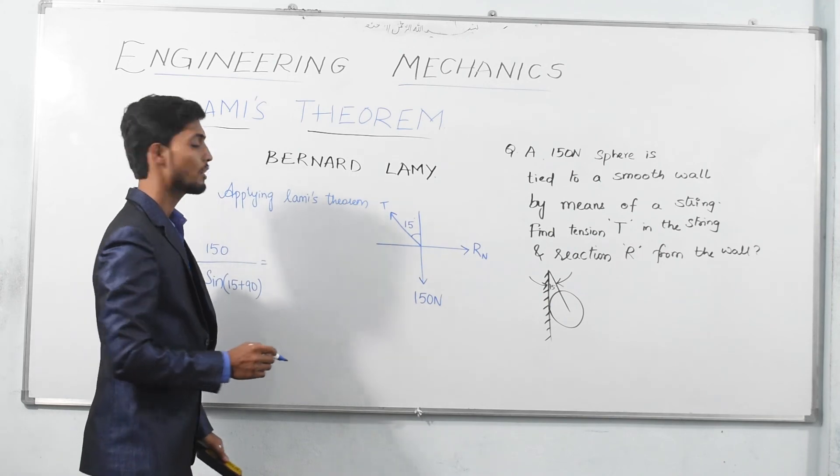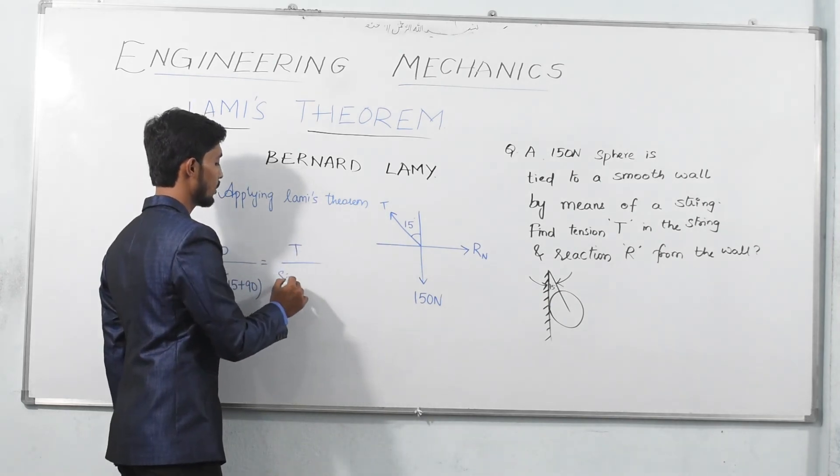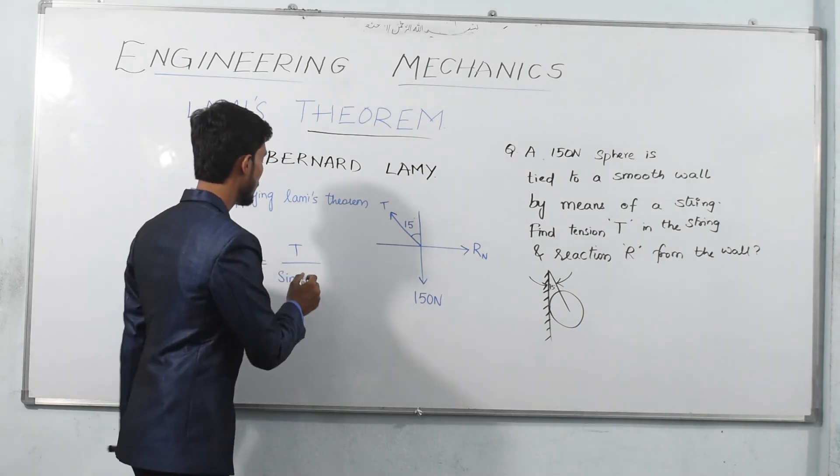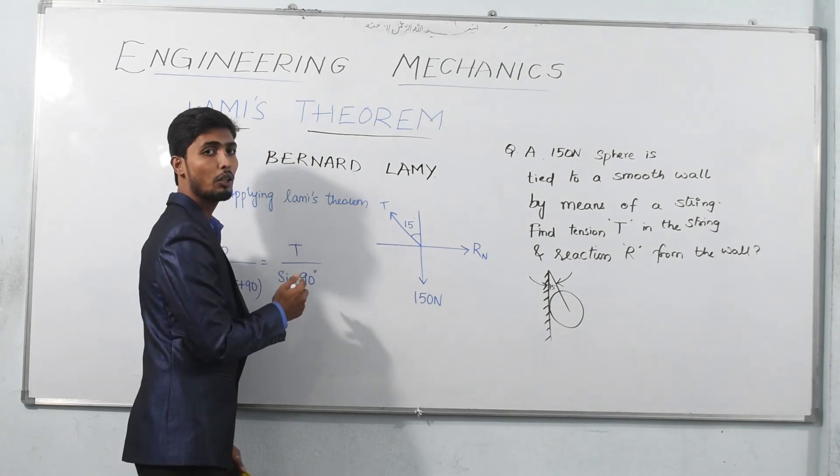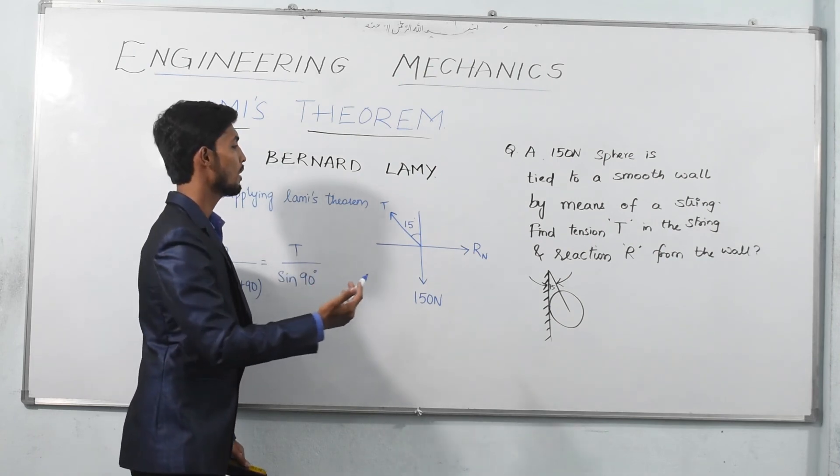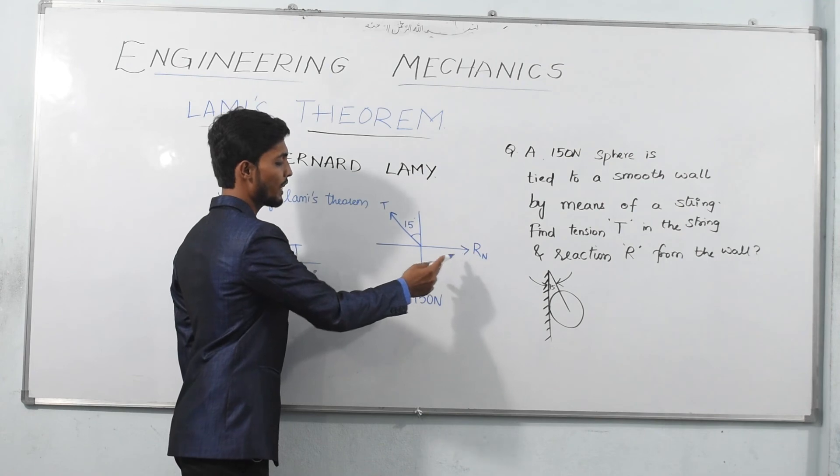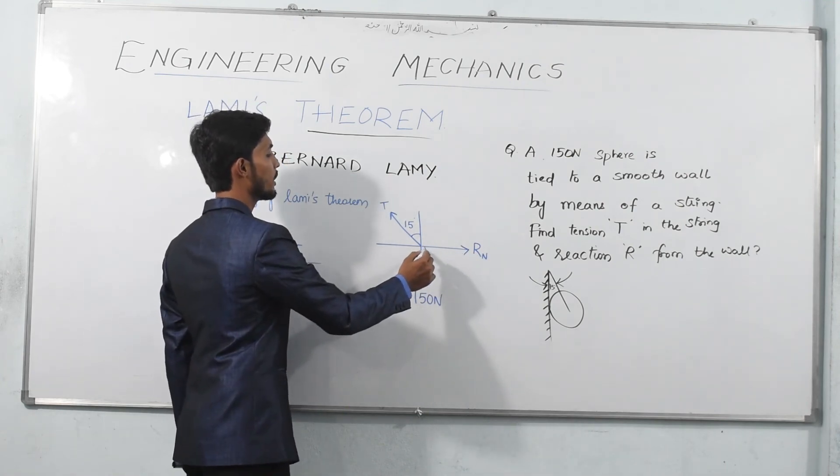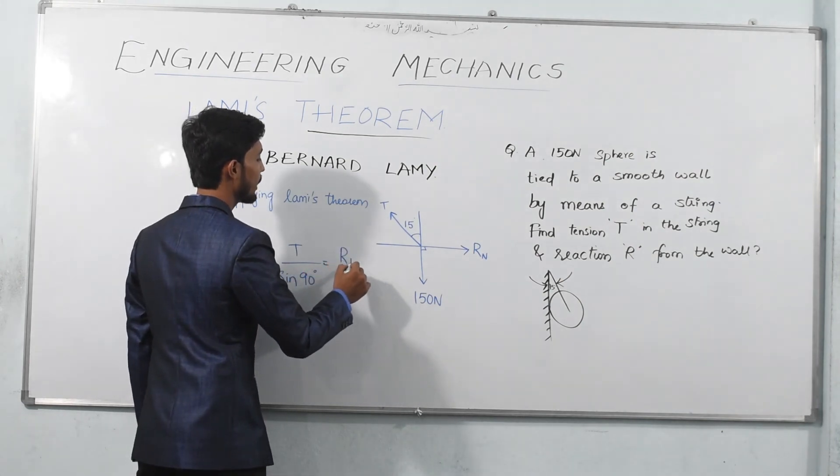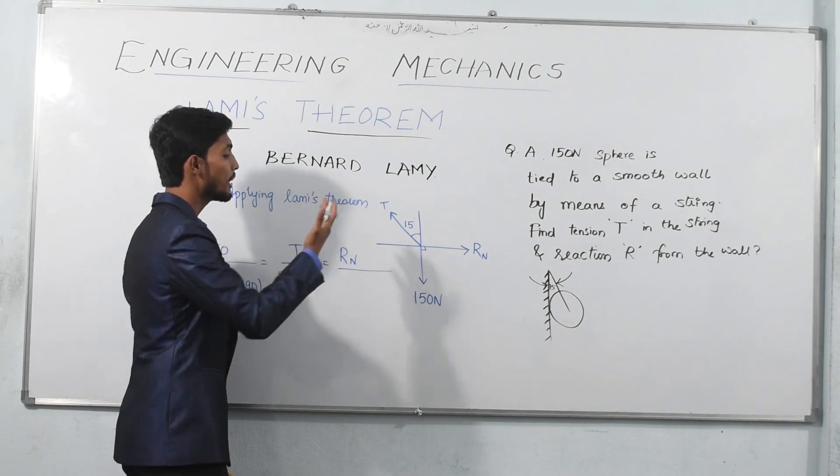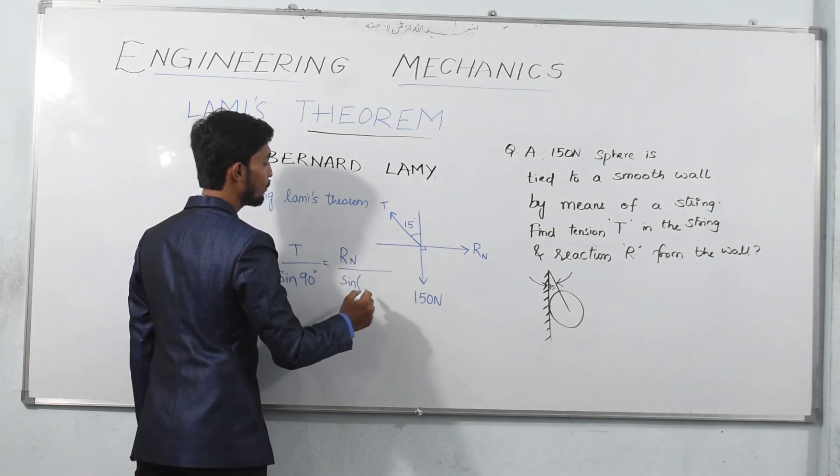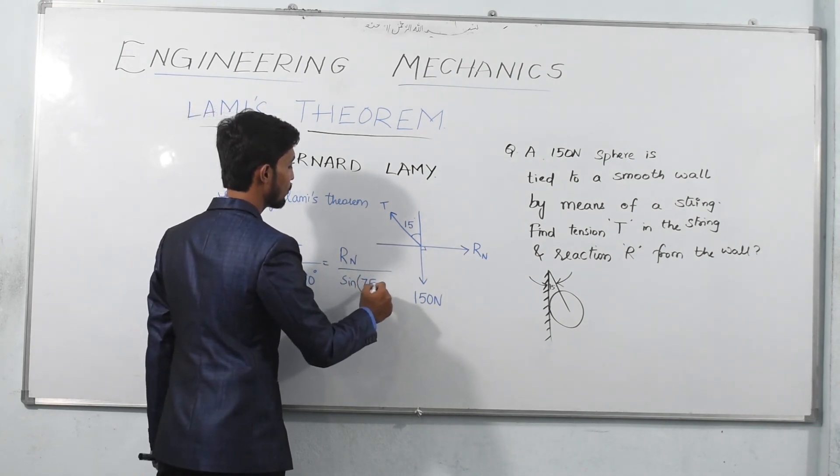If I consider the tension, then there are two forces left: weight and normal reaction. Again, these two substitute for a quadrant which equals 90 degrees. Majority of students fail to attempt this problem and instead of writing 90, they write 90 plus 90. We need to observe: if I consider tension, there are only two forces, reaction and weight. The angle between these two is obvious, that is a quadrant which is 90. If I consider normal reaction, then the leftover forces are tension and weight. Since tension is also in a quadrant, 15 gets subtracted, we are left over with 75 plus 90.